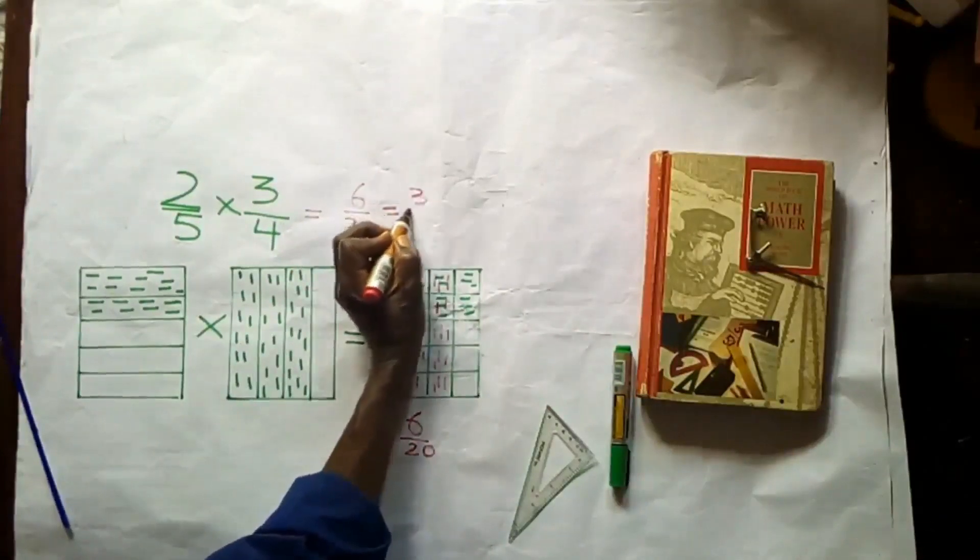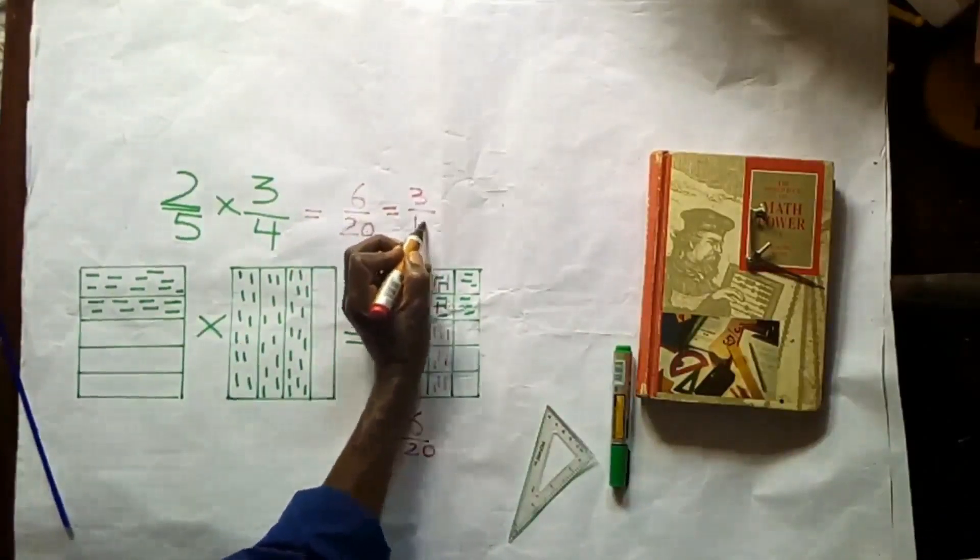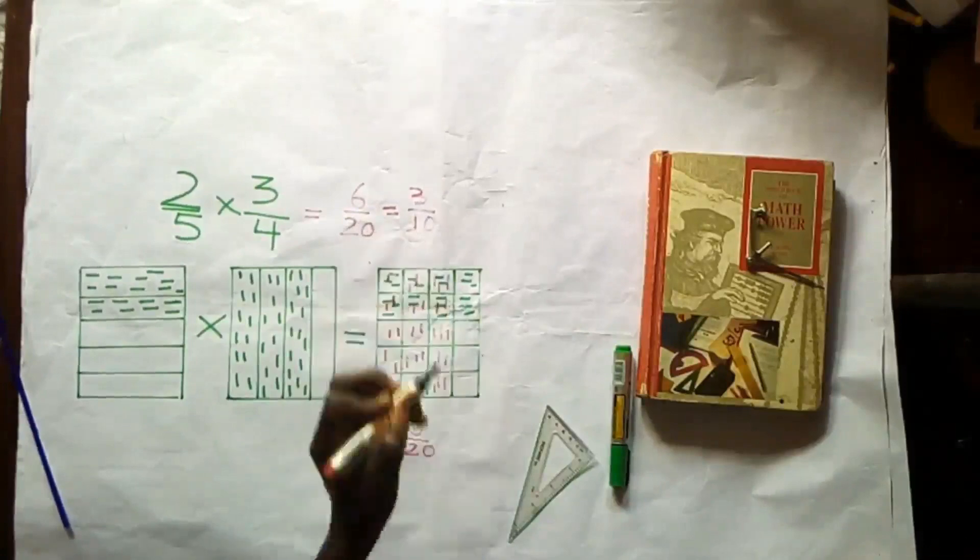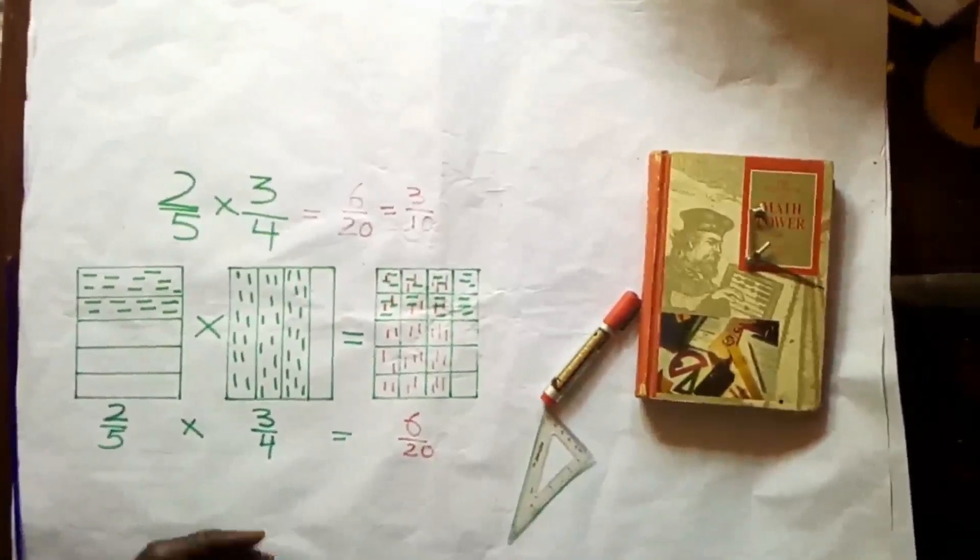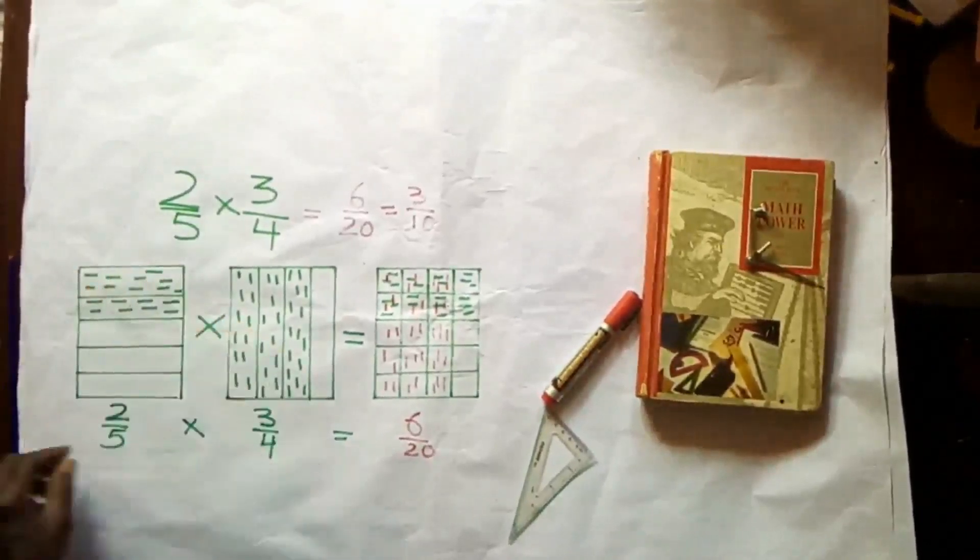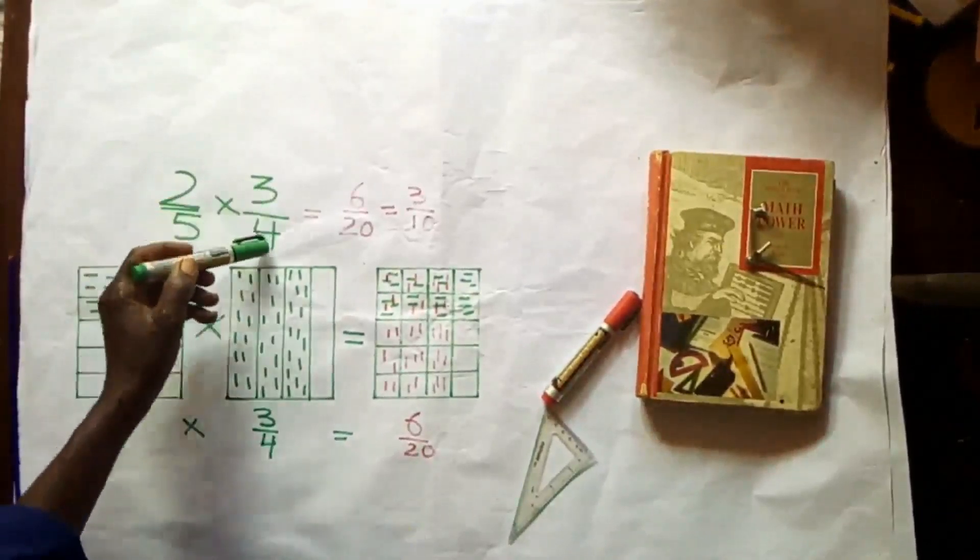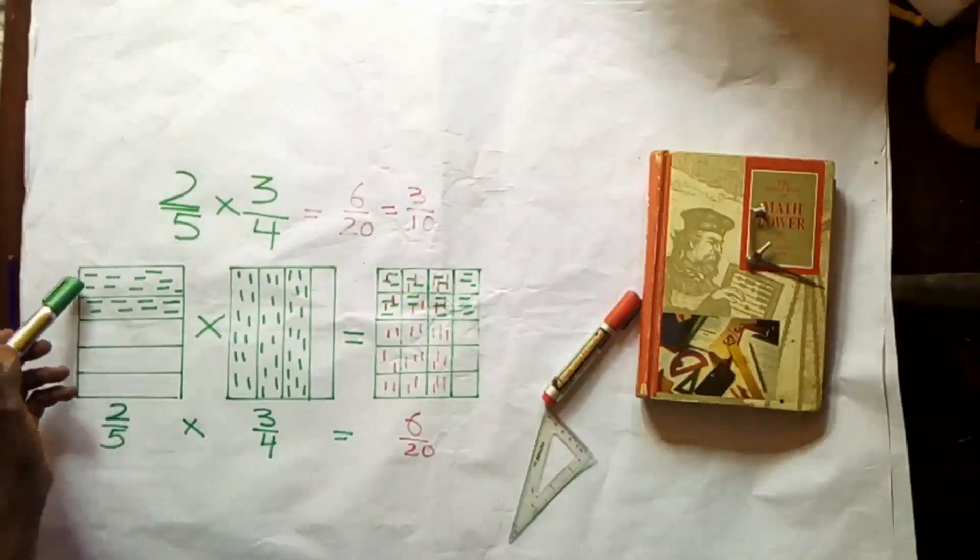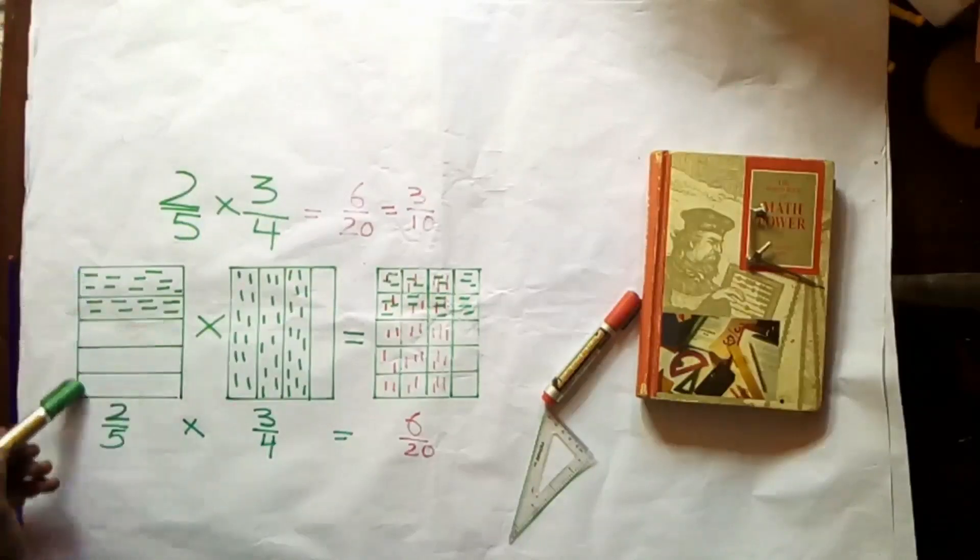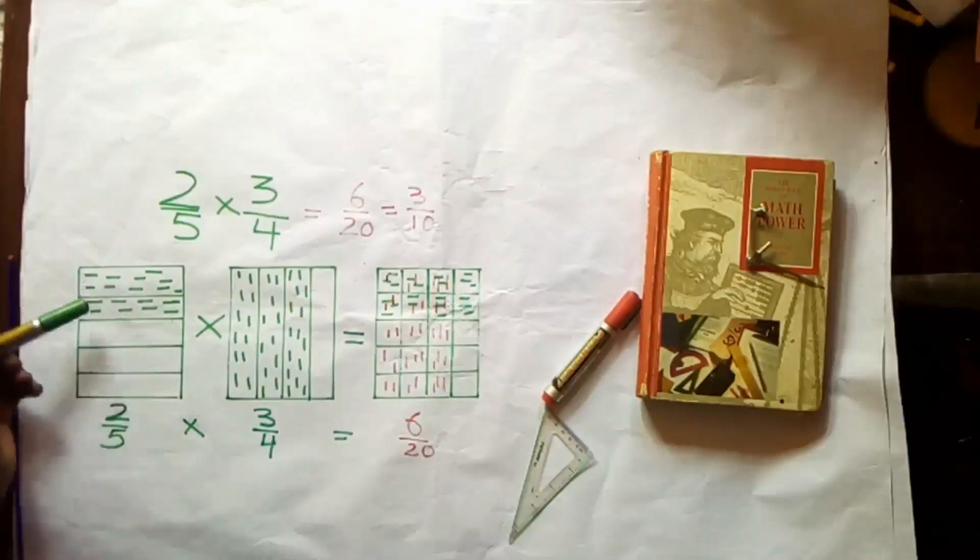3/10. Multiplying 2/5 by 3/4, graphically represented: 2/5 in terms of the number of horizontal rows to the total area of the rectangle, so you have 2 rows out of the total number of 5 rows.